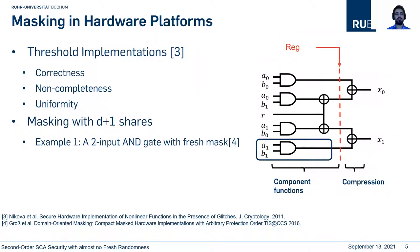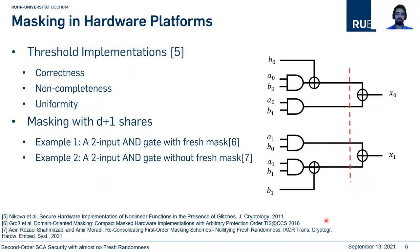D plus one sharing is independent of the algebraic degree of the target function. Here I show a simple two-input AND gate first-order secure design with a single-bit fresh mask. In this methodology, the masked version is divided into two parts — one is called the component function. We have a register layer where each component function should be registered, and then a compression layer to generate two output shares.